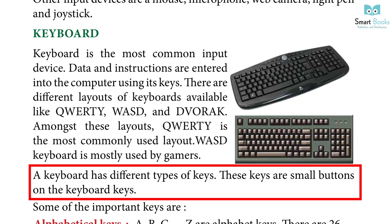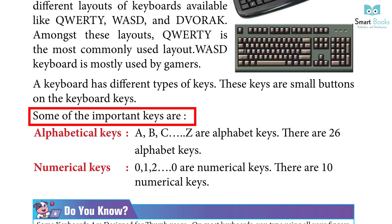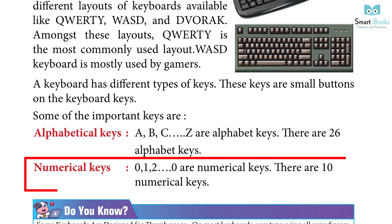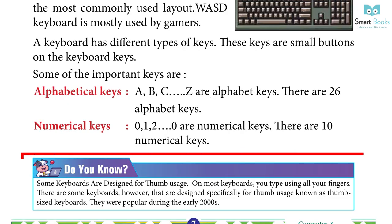A keyboard has different types of keys. These keys are small buttons on the keyboard. Some of the important keys are: Alphabetical keys — A, B, C to Z are alphabet keys; there are 26 alphabet keys. Numerical keys — 0, 1, 2 to 9 are numerical keys; there are 10 numerical keys.